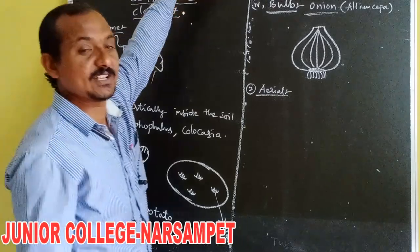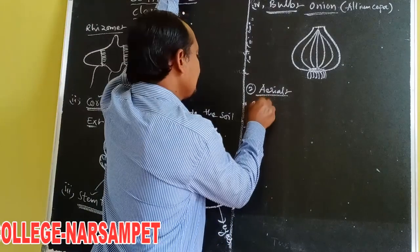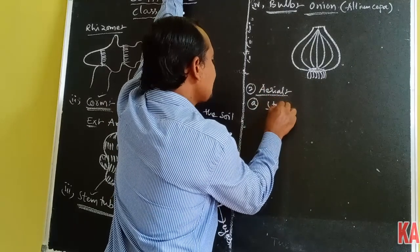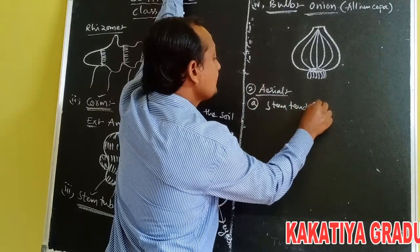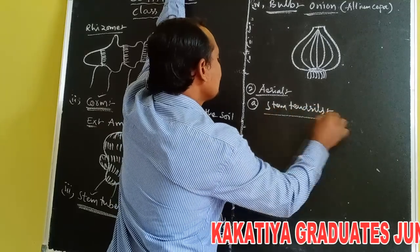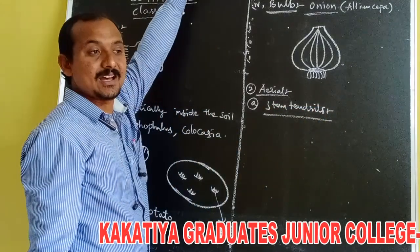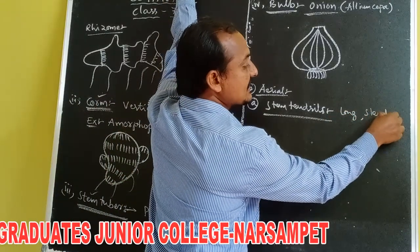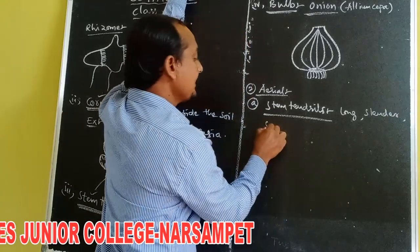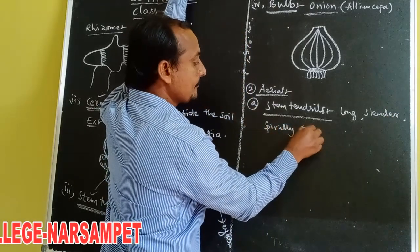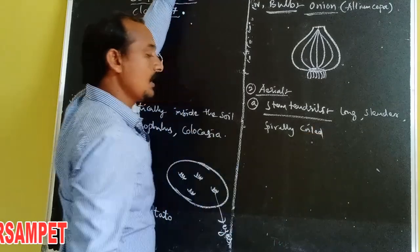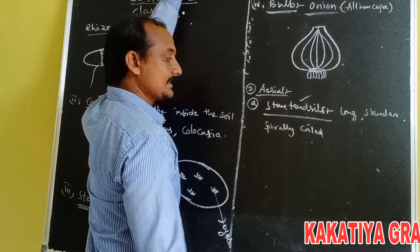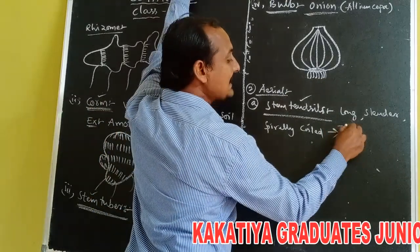The second type of stem modifications are aerial stem modifications, which are five types. First is stem tendrils. Tendrils are long, slender, and spirally-coiled structures. These are developed from axillary bud or terminal bud.